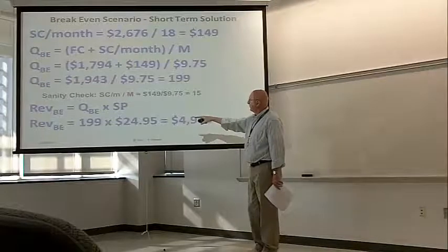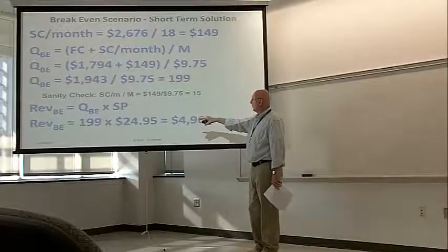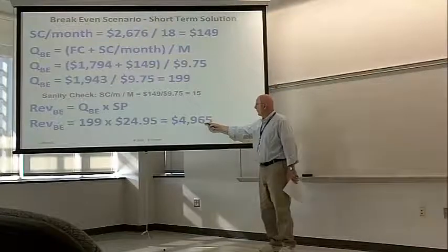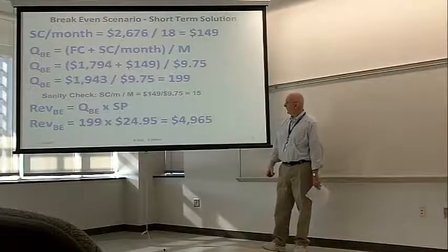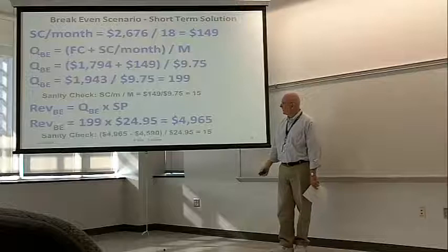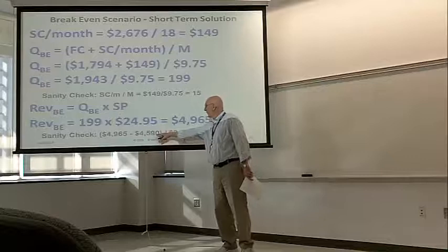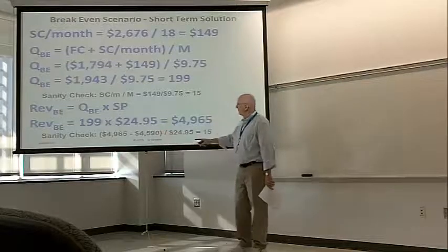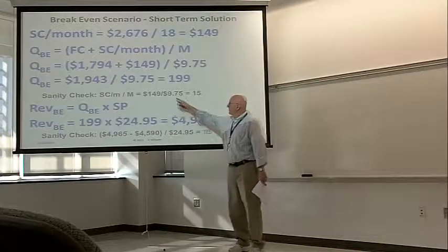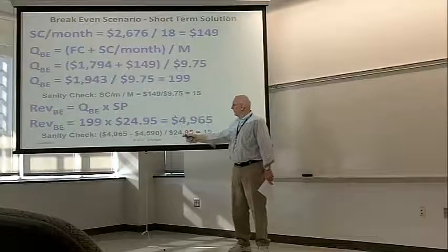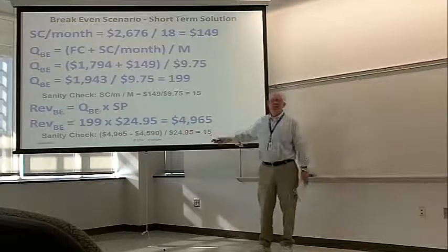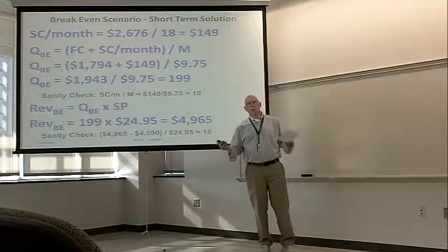The revenue, 199 times $24.95, is $4,965. The difference, $49.65 minus $45.90, divided by not the margin, as in this case, but by the selling price. And that comes out to 15 also. So we got it right.